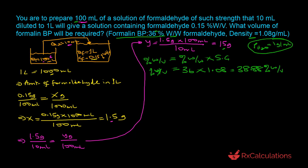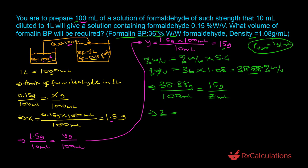Now we set up a proportion using 38.88% w/v, meaning 38.88 grams of formaldehyde per 100 milliliters of solution. If we need 15 grams, the volume Z required is: Z equals 15 grams times 100 milliliters divided by 38.88 grams, which equals 38.58 milliliters.